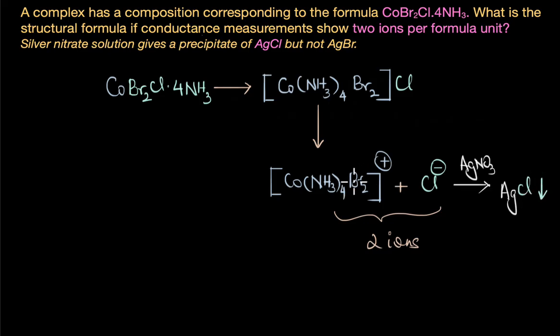The bromide ions remain within the coordination sphere and do not react with silver nitrate solution, which is consistent with the absence of AgBr precipitate. So to answer our question, the correct structural formula of this complex with the composition CoBr₂Cl·4NH₃ is [Co(NH₃)₄Br₂]Cl.